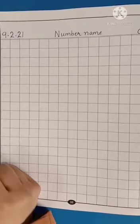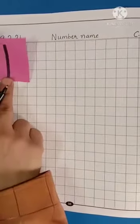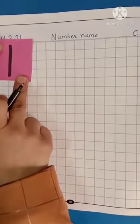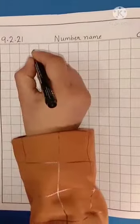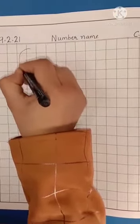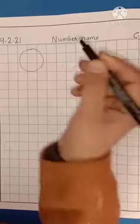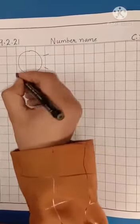Now, children, tell me what is this number? This is number 1. We are going to draw an object that is sun. Draw 1 sun.